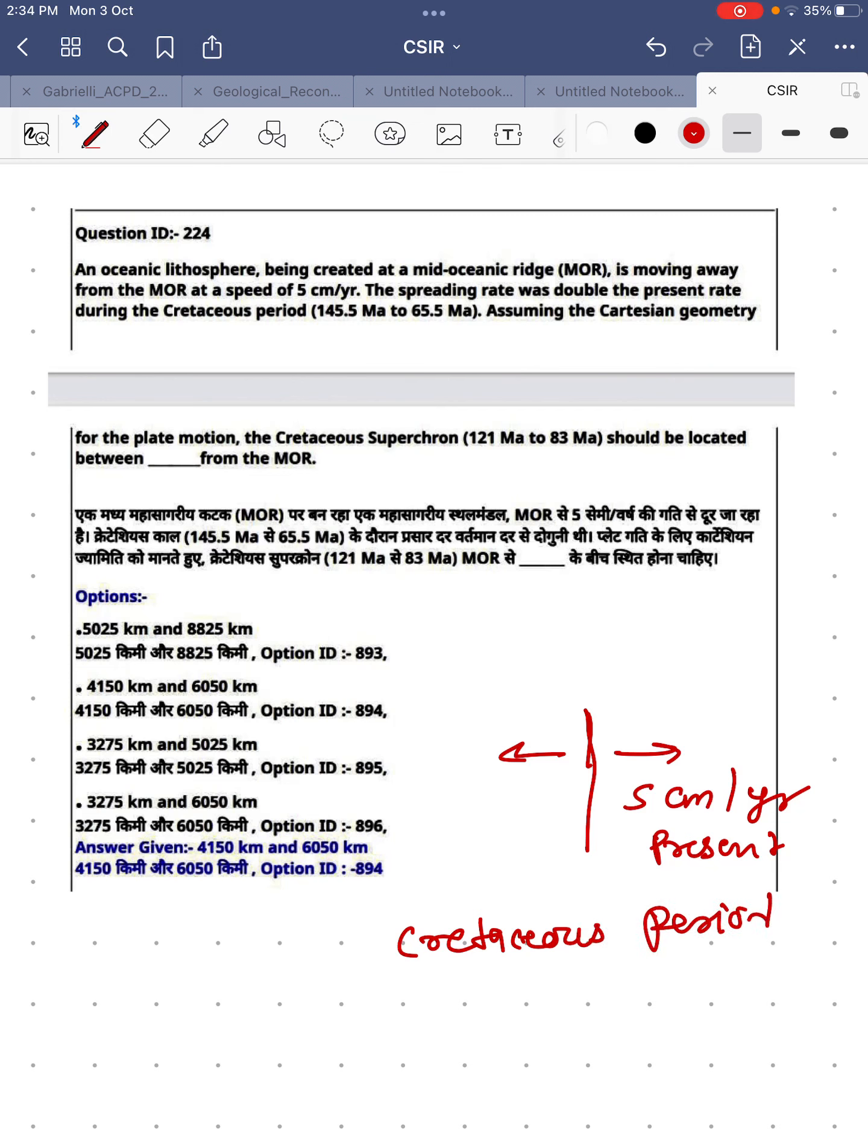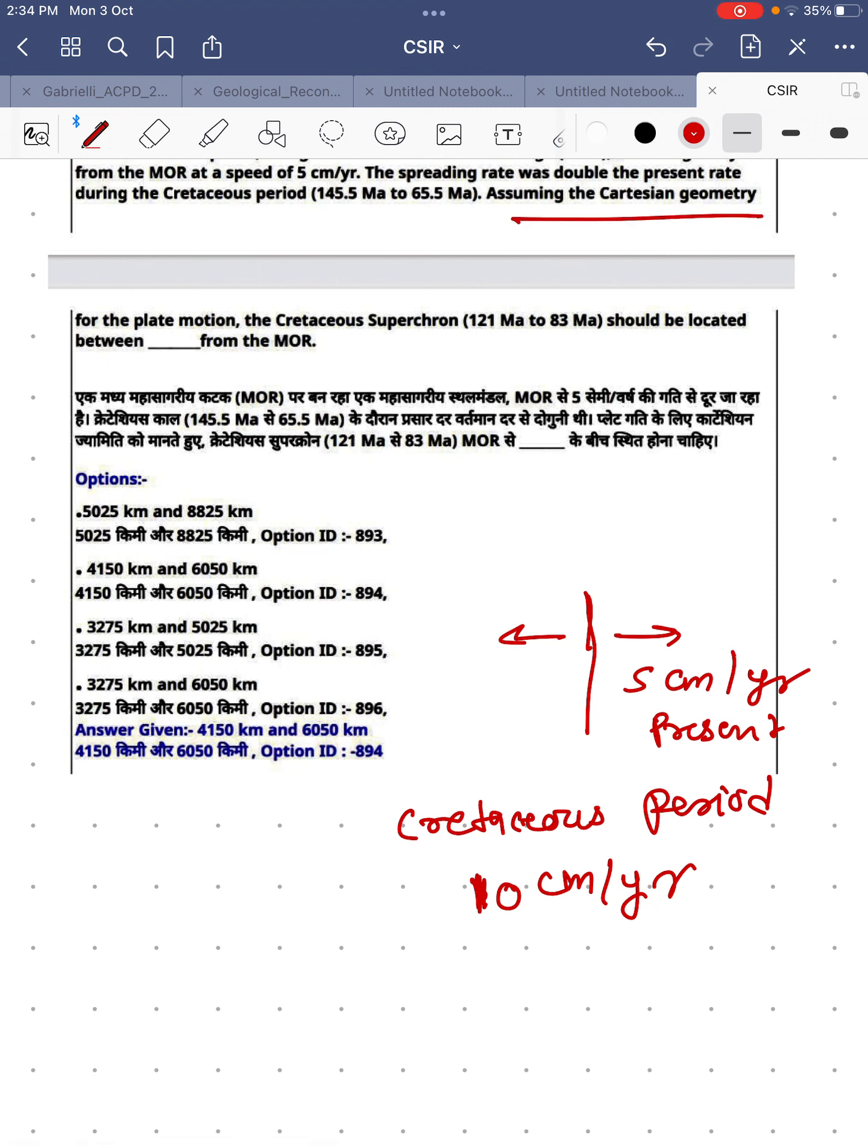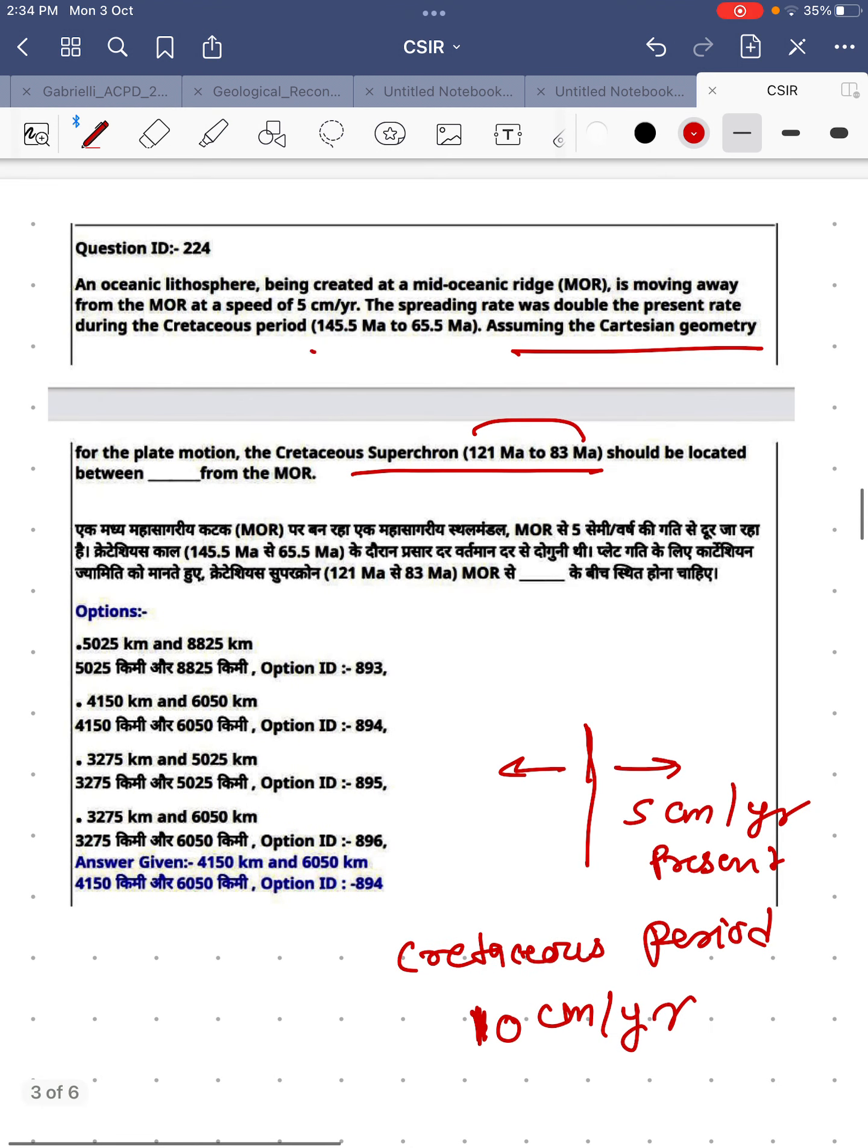The rate is what? Double of present, so it will be 10 centimeters per year, right? Assuming the Cartesian geometry for the plate motion, the Cretaceous superchron (121 Ma to 83 Ma) lies in this one. We have to find where this superchron should be located from the MOR.